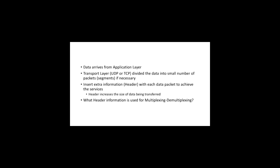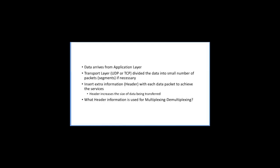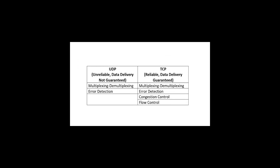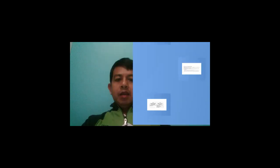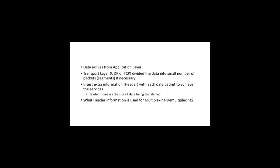Each of these packets will contain extra information called header information. We require this header information to achieve services like multiplexing, demultiplexing, and error detection. These functions are achieved by inserting additional information into the data packets, and this additional information is known as header information.